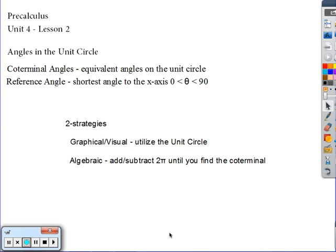A lot of times we're going to be asking you to convert positive or negative angles into a coterminal angle that is between 0 and 360. Two strategies you have for that are a graphical or visual strategy which utilizes the unit circle, and the other would be an algebraic strategy where we add and subtract 2π until we find that coterminal angle that we're looking for. Let's take a look at a couple examples.